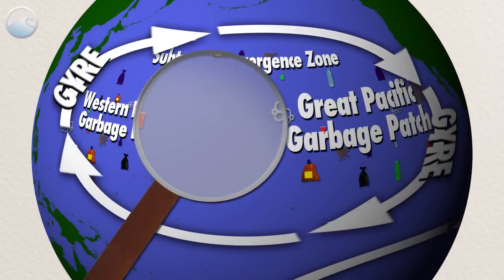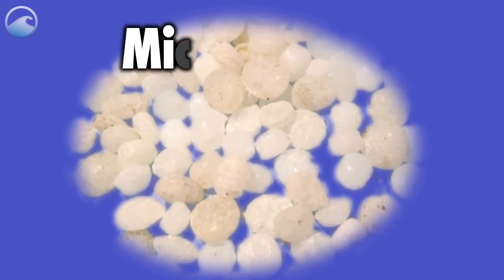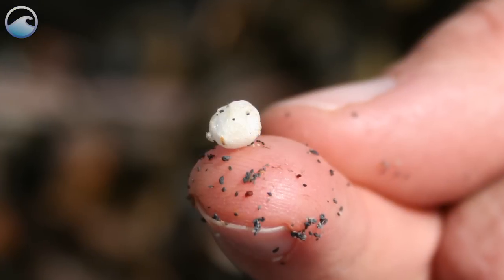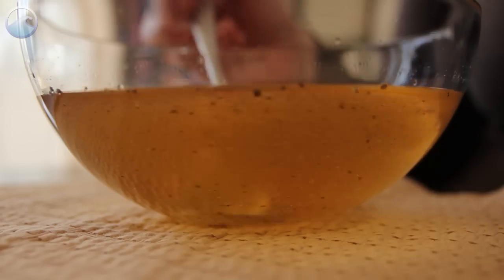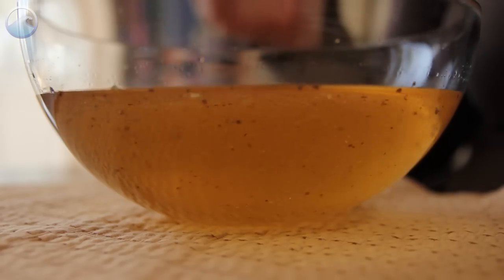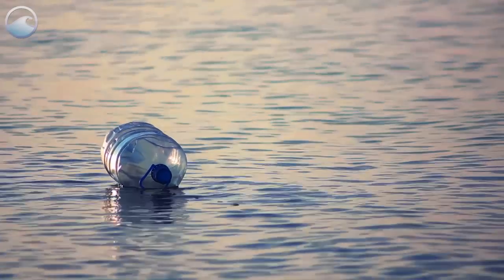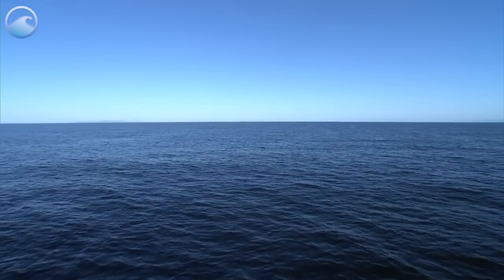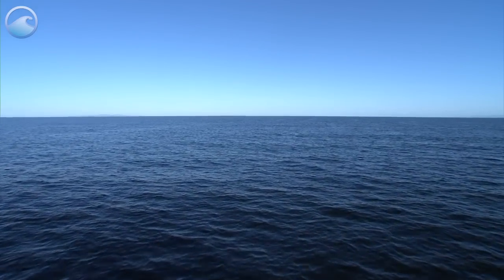A garbage patch is made up of tiny plastic pieces called microplastics that are less than five millimeters long. It's more like pepper flakes swirling in a soup than something you can skim off the surface. You might come across some larger items like plastic bottles, but it's possible to sail through a garbage patch and not see anything.